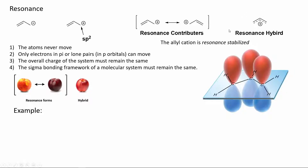Resonance forms are not different molecules — they are different ways to represent where the electrons of a molecule are. We can summarize all the different resonance contributors into a resonance hybrid. This resonance hybrid shows that the positive charge is delocalized throughout all three carbons. In the allyl cation, all three p orbitals are aligned, and two electrons are shared by all three p orbitals, meaning the electron density is spread across three atoms.